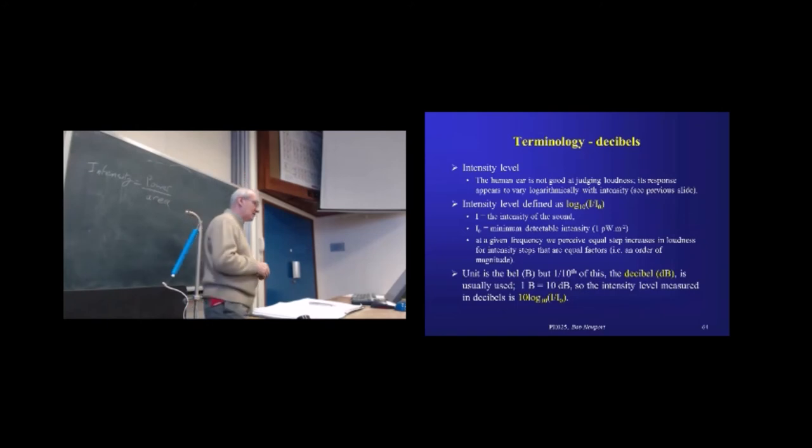Now, that unit is called the bell. You'll be well aware that that's hardly ever used. It's mostly the decibel that gets quoted, and the decibel, surprise, surprise, is a tenth of a bell. So the equation that you're going to use many times over is this one right at the bottom here. So the intensity level is the intensity level, not intensity. That's the differentiation between the two. The intensity level, then, is 10 times log to the base 10 of whatever the intensity is, divided by 10 to the minus 12.